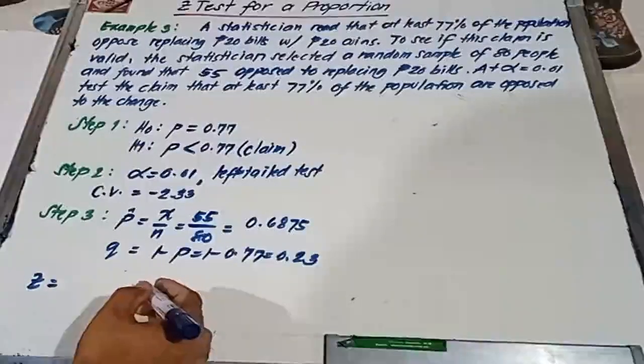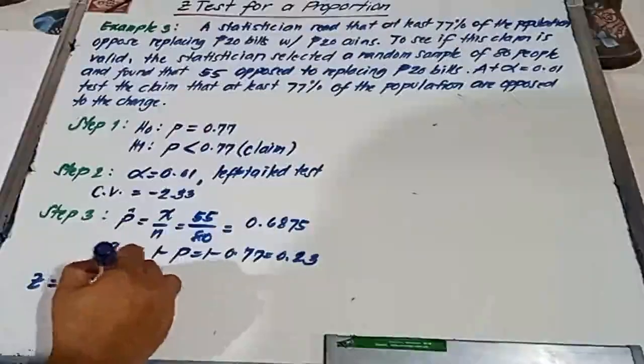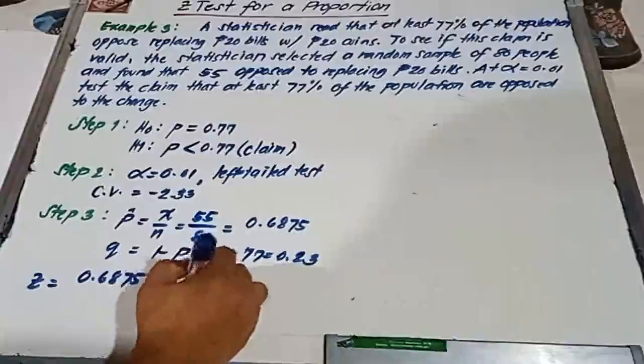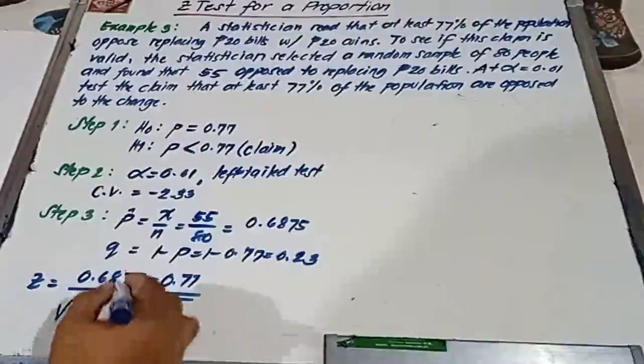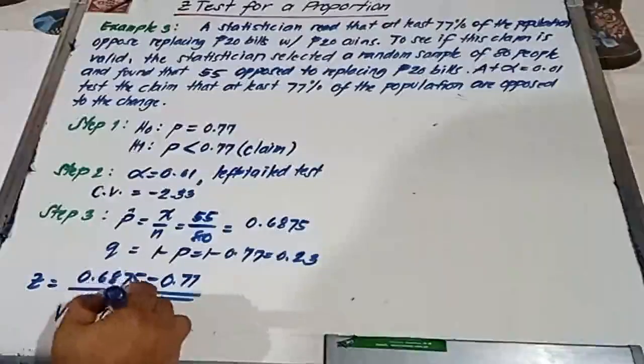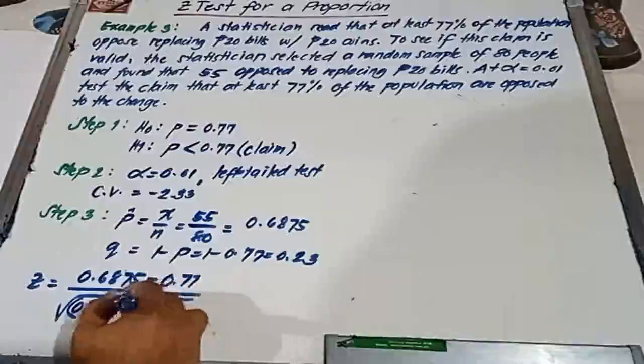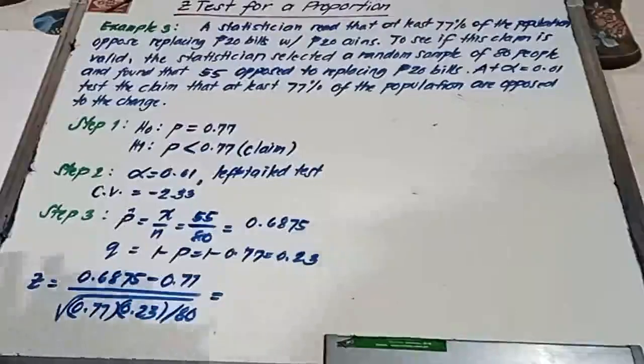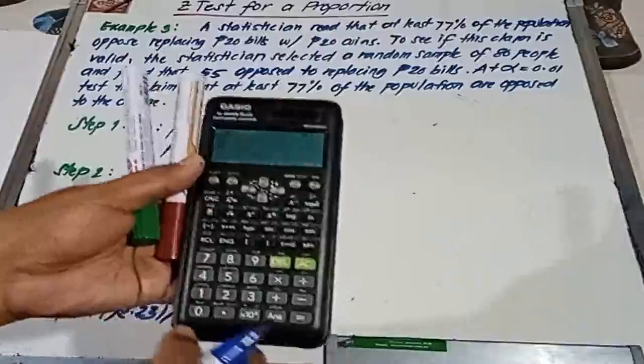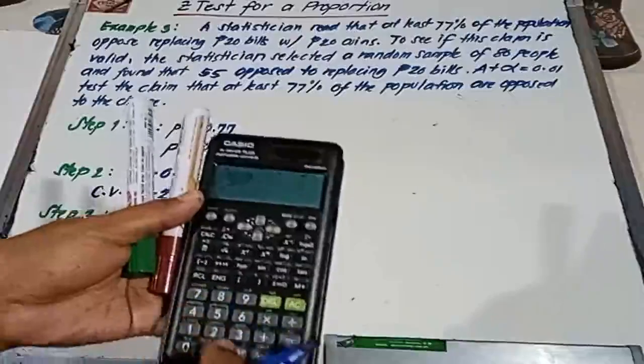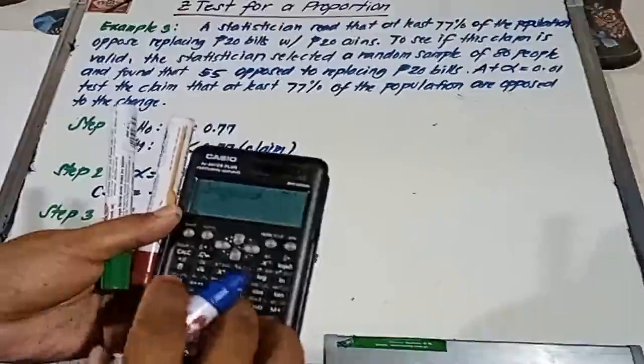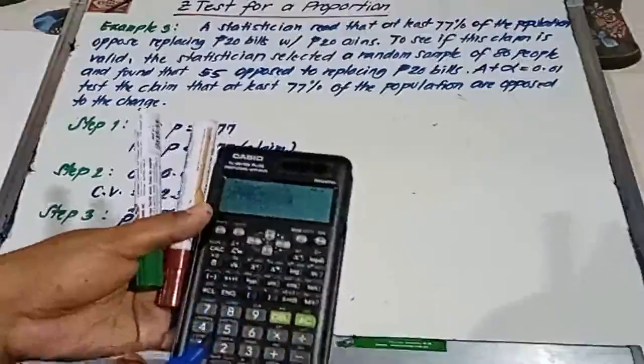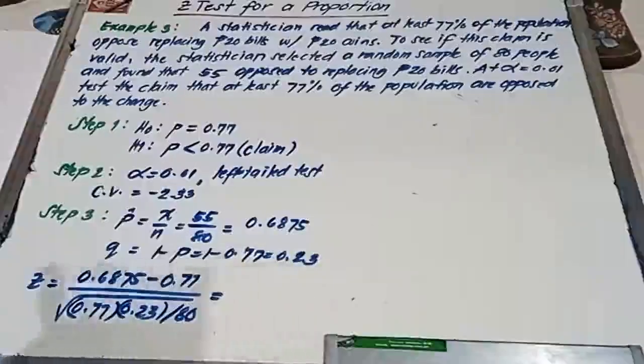Now we compute for our test value. That is p-hat which is 0.6875 minus 0.77 over square root of PQ over N. And PQ, that is 0.77 times 0.23 divided by N which is equal to 80. We have the fraction on top is 0.6875 minus 0.77, at the bottom is square root of 0.77 times 0.23 divided by 80. So our answer is negative 1.75.